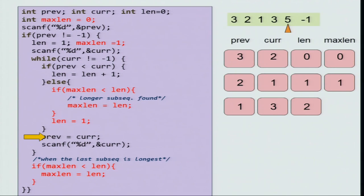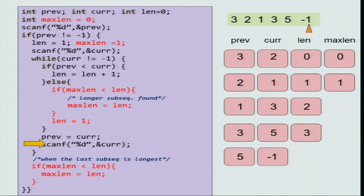Again, you advance previous and current. So, previous becomes 3, current becomes 5. Again, 3 is less than 5. So, increase the length. We are extending the sequence. So, the length becomes 3. Advance. So, previous becomes 5 and current becomes minus 1.